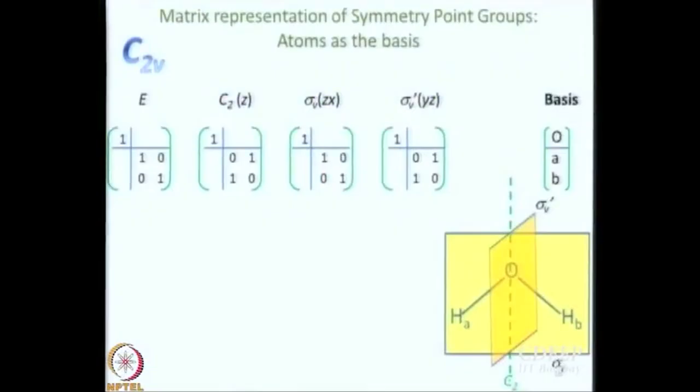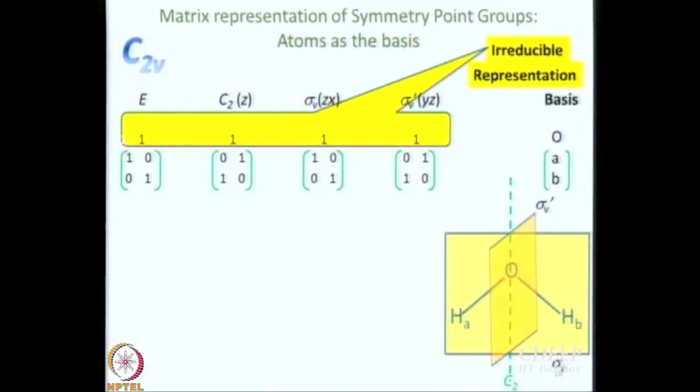When we talk about classes, we talk about irreducible representations only. I know that the second block is a reducible representation, but officially at this point we do not know whether it is reducible or irreducible. If it is reducible, then the question of class does not arise. So we have a 1×1 matrix and a 2×2 matrix. We now have two representations. The first one is 1, 1, 1, 1 — no matter what you do, it does not change. This is a 1-dimensional and therefore irreducible representation.